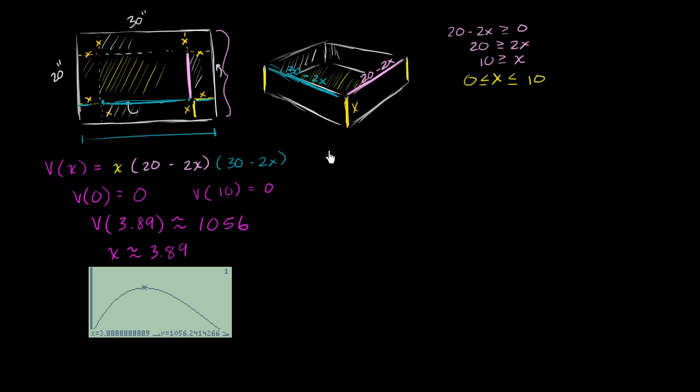So let's rewrite volume as a function of x. It's going to be x times - I'll multiply these two binomials first - so 20 times 30 is 600. Then I have 20 times negative 2x, which is negative 40x. Then I have negative 2x times 30, which is negative 60x. And then I have negative 2x times negative 2x, which is positive 4x squared.